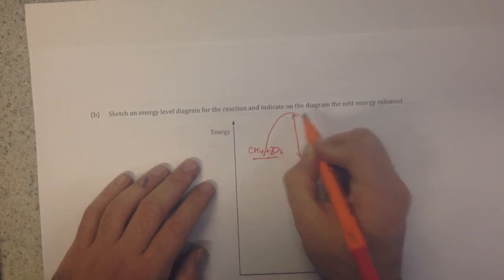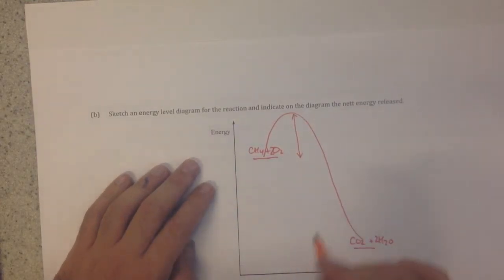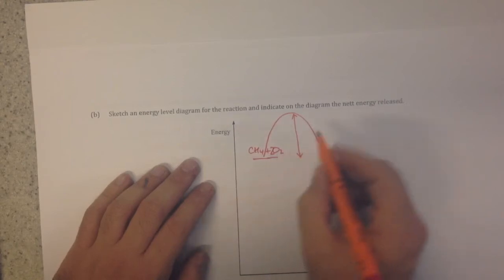This distance between the top of the hump for an exothermic reaction and the energy level of your starting material is called the activation energy.